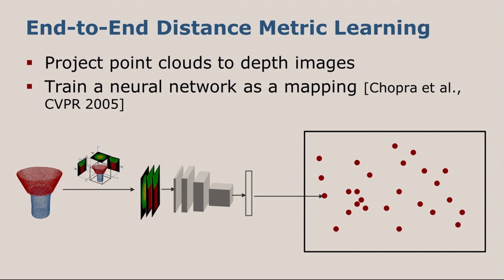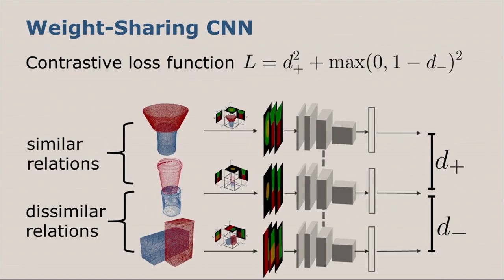To train this metric such that it has the desired properties, we use a weight-sharing convolutional network. The idea here is that we want to pull together similar scenes and push apart dissimilar scenes. We clone this transformation function three times, and one instance gets the reference scene as input, which is depicted in this picture here in the middle. Then we present another instance of the network a similar scene, and the last instance gets the dissimilar scene.